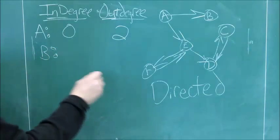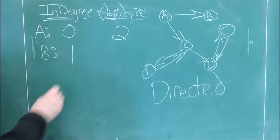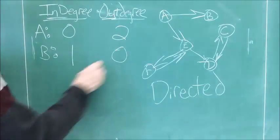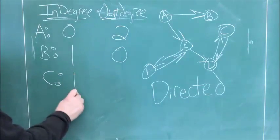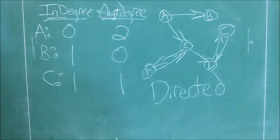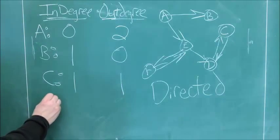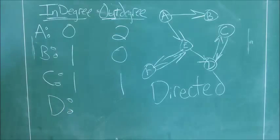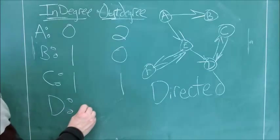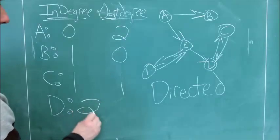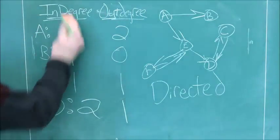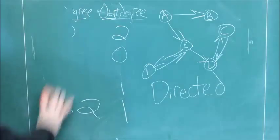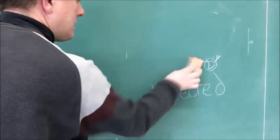For B, there are no ties heading out from B, but there is one heading in. So we have an in-degree of 1, out-degree of 0. For C, there is one tie going in to C, and one tie heading out from C. For D, we can see two ties going in and one tie headed out. So for a directed network, you measure in-degree and out-degree. For an undirected network, you simply measure degree, because there is no direction.